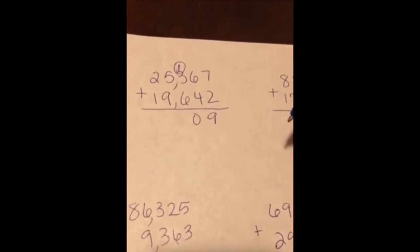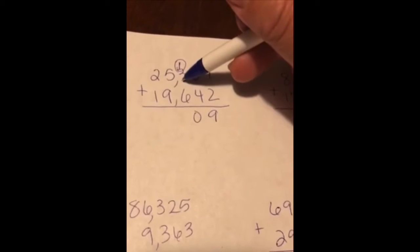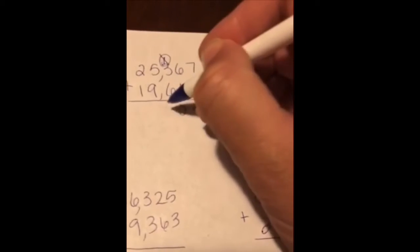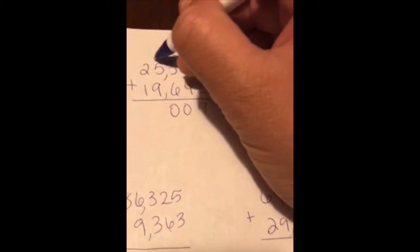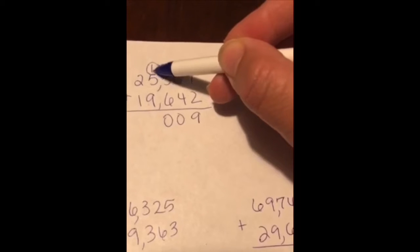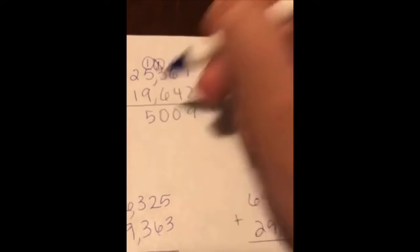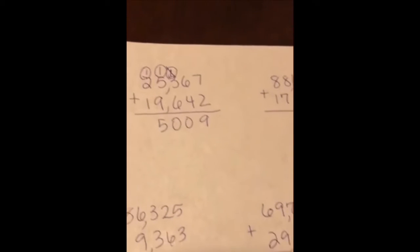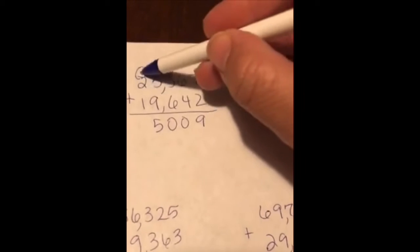Six plus three in that hundreds place is nine. Adding my one, that's ten. I'm going to drop my zero and regroup my one to the thousands place. Nine plus one is ten, plus five is fifteen. I regroup my one into the ten-thousands place, and two plus one is three, plus one is four. So it looks like I have a sum of 45,009.